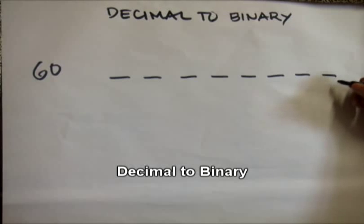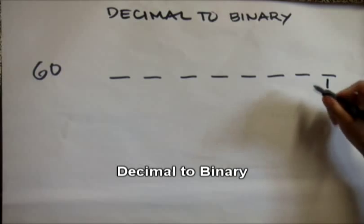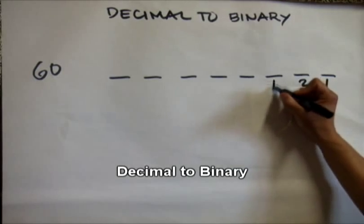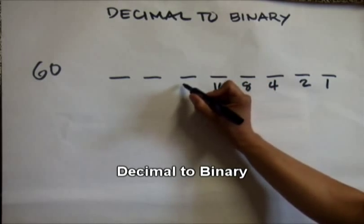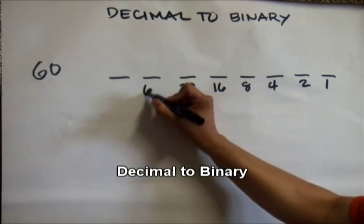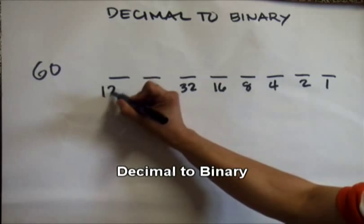Under the binary digit, we're going to have these numbers: 1, 2, 4, 8, 16, 32, 64, and 128.